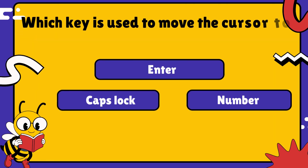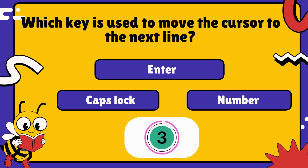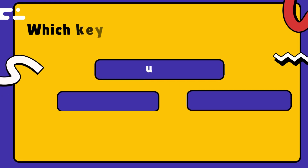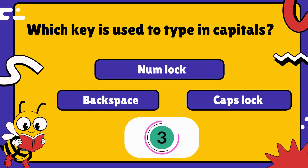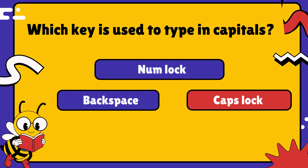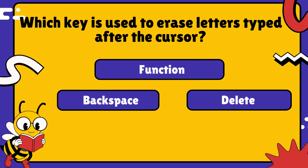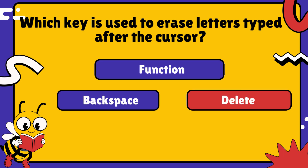Which key is used to move the cursor to the next line? Well done — the answer is enter key. Which key is used to type in capitals? You got it — it's the caps lock key. Which key is used to erase letters typed after the cursor? Absolutely right — it's the delete key.